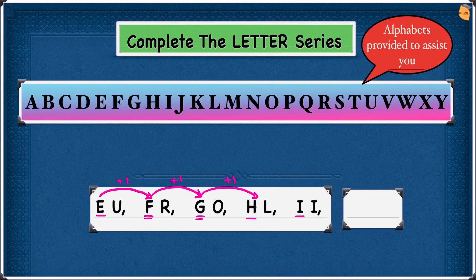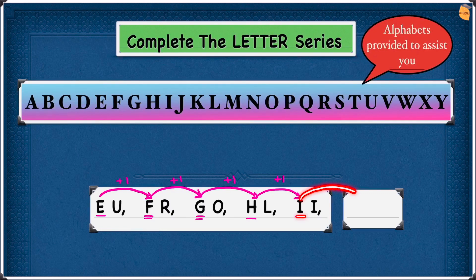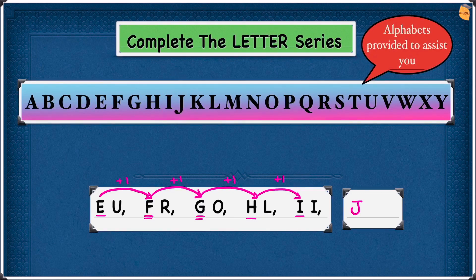Now H to I. Looking at the alphabet, H is here and I is here — one step forward, so plus 1. Write plus 1. Now to get the first letter of our answer we have to do plus 1 from I. Moving one step forward from I leads us to J.